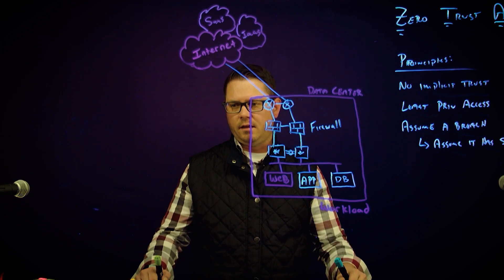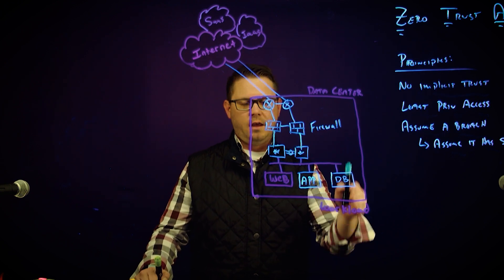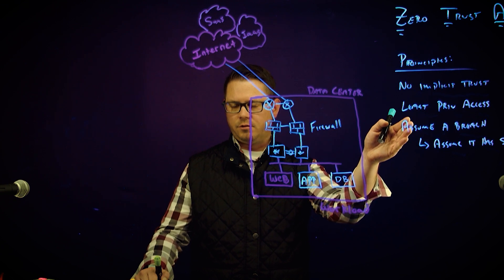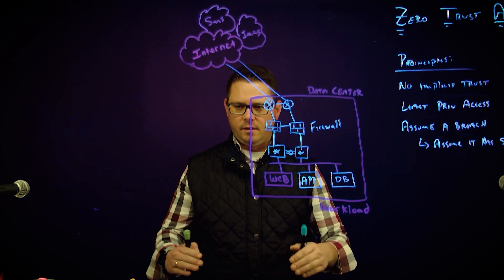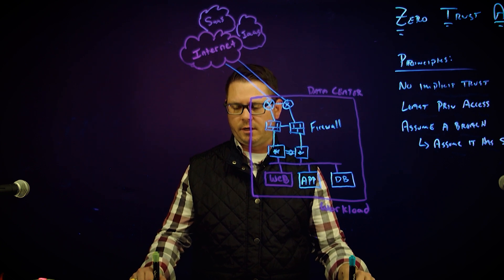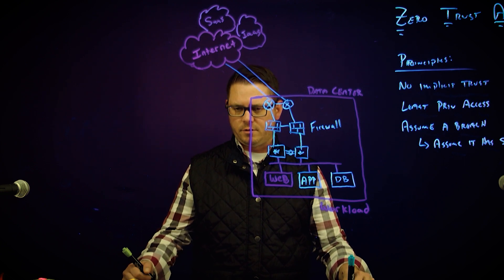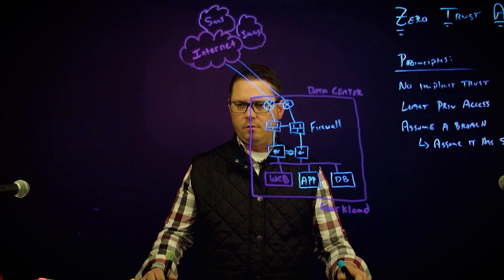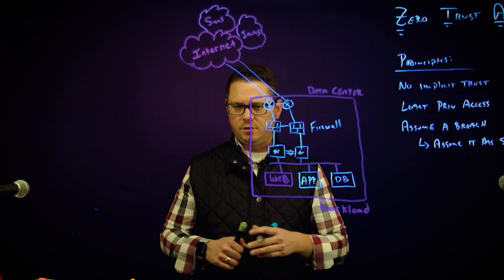And then lastly, we start performing layers of segmentation, and we talk back to where we assume that there's been a breach. This really helps limit our blast radius from an exposure perspective. So from a business perspective, it lowers risk of exposure and lowers the effect of a potential breach.